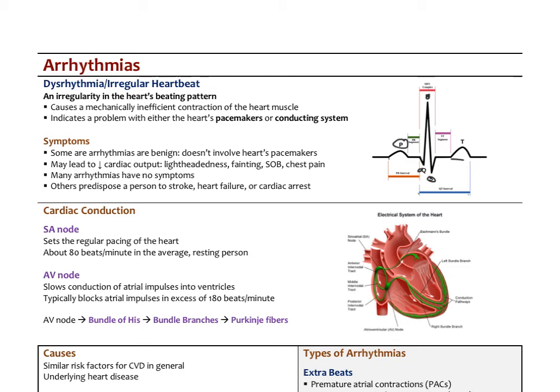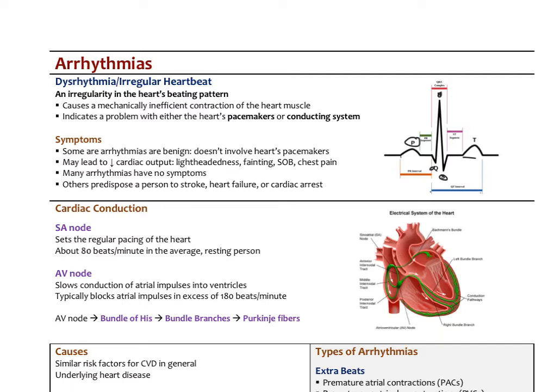The symptoms of arrhythmia can be benign — typically those arrhythmias don't involve the heart's pacemakers, such as premature ventricular and atrial contractions. But they can be more serious, leading to decreased cardiac output with lightheadedness, fainting, shortness of breath, or chest pain. Many arrhythmias are asymptomatic. Some arrhythmias like atrial fibrillation, because they cause turbulence in the atrial chambers, can predispose a person to stroke over time, develop heart failure, or even cardiac arrest. So with arrhythmias, we always want to do a full workup to be sure this is not something more serious that needs urgent attention.